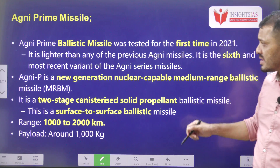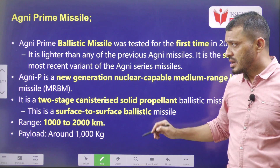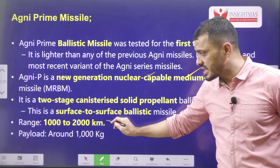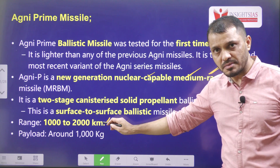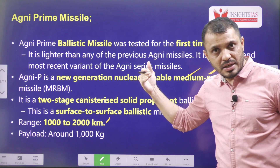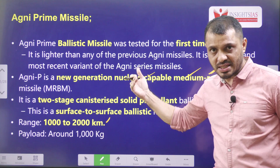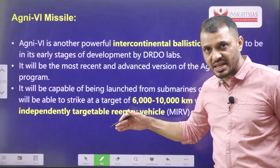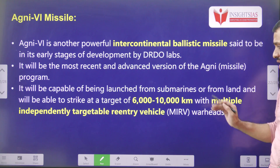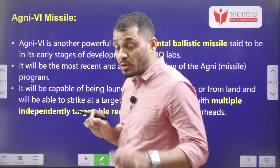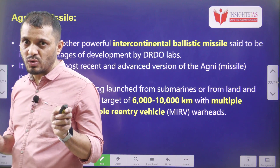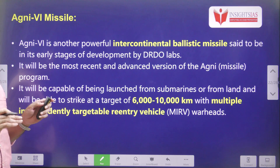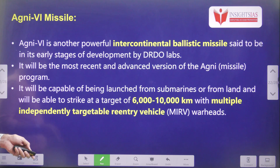Agni-1P missile is the lighter version of the Agni-5. It is a new generation, nuclear capable, medium-range missile with a range of about 1000 to 2000 kilometers. It can carry nuclear warheads. Agni-6 is currently under development and the range can be increased from 6000 to 10,000 kilometers. By joining the Missile Technology Control Regime, MTCR, India is greatly advantaged in terms of increasing the target range of its Agni missiles.